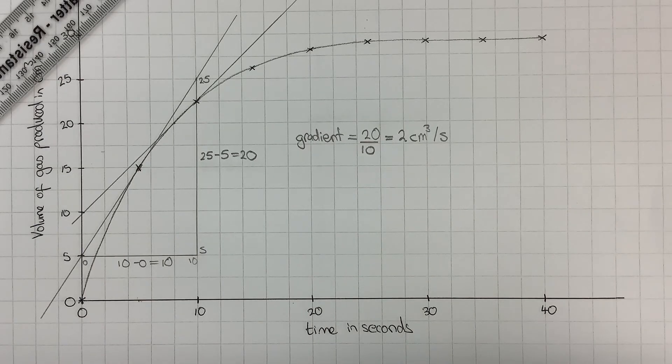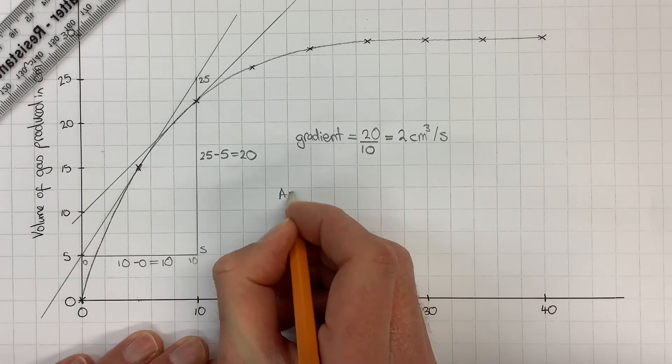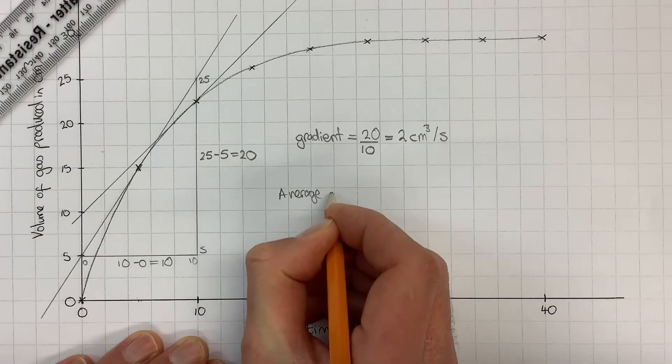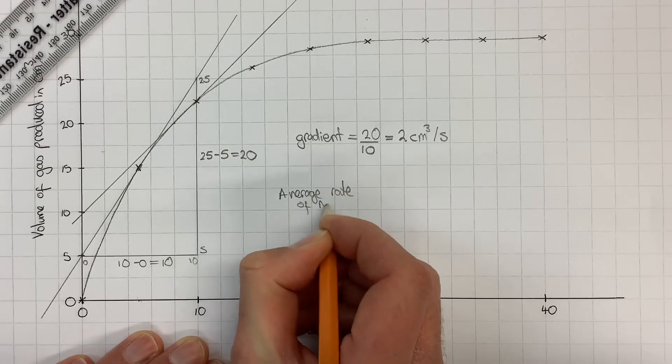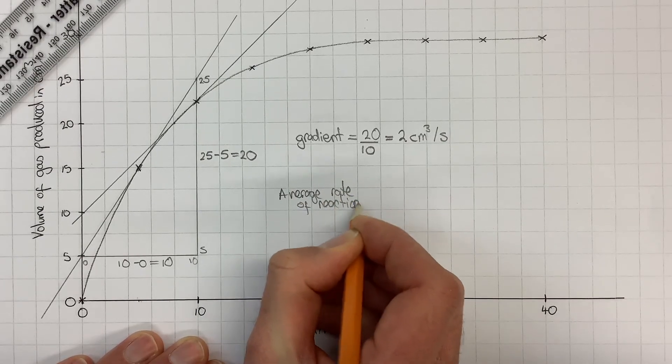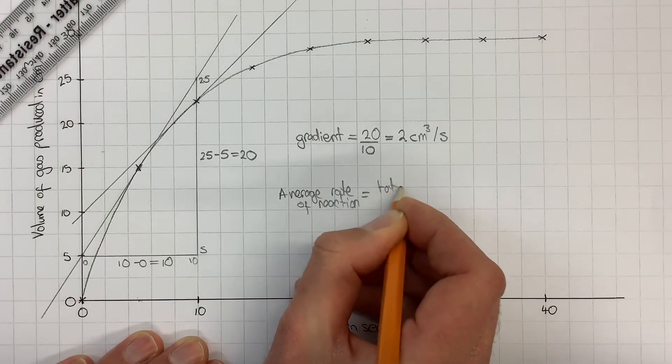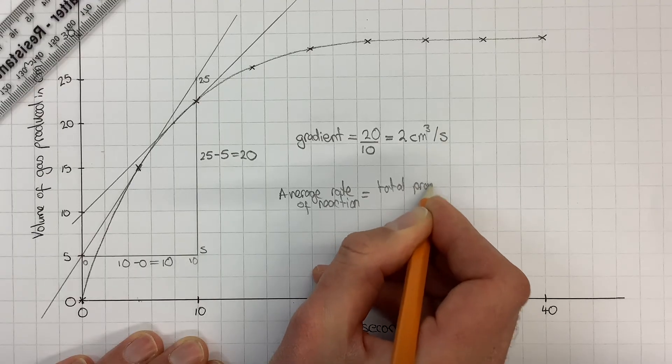What you're doing there is working out the average rate of reaction, and the average rate of reaction is just the total produced over the total time.